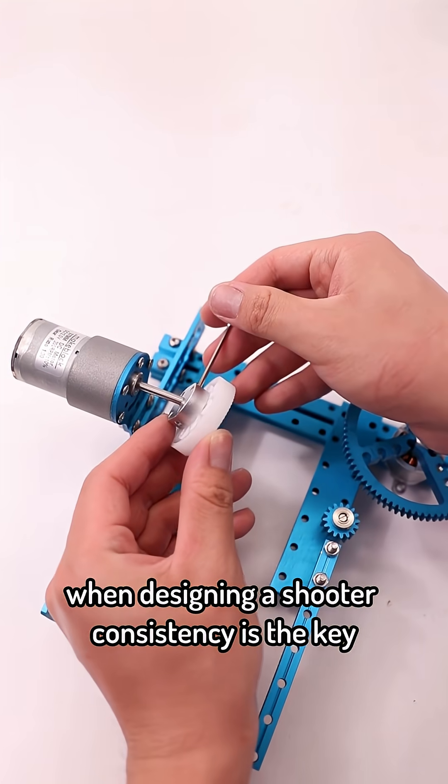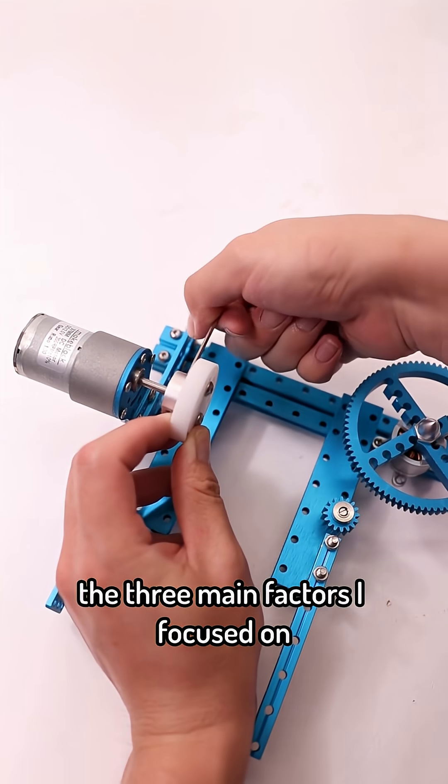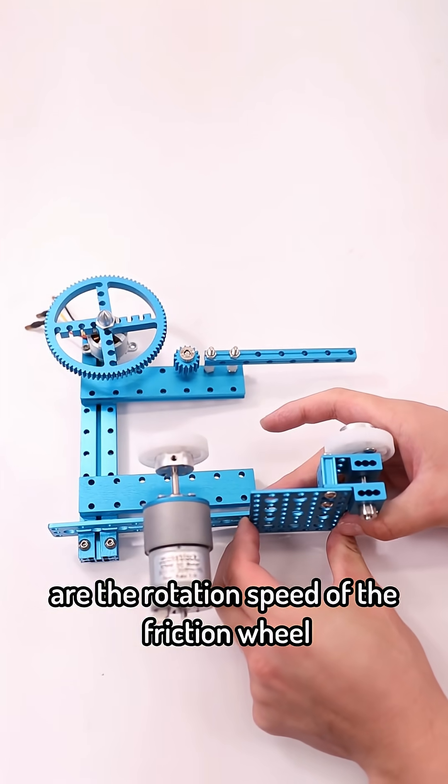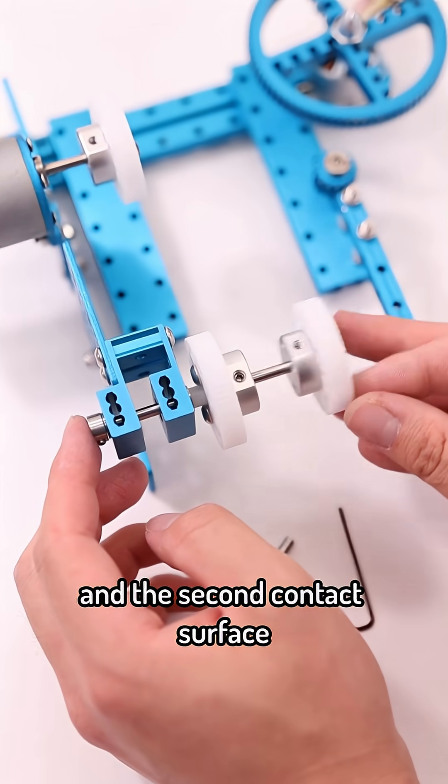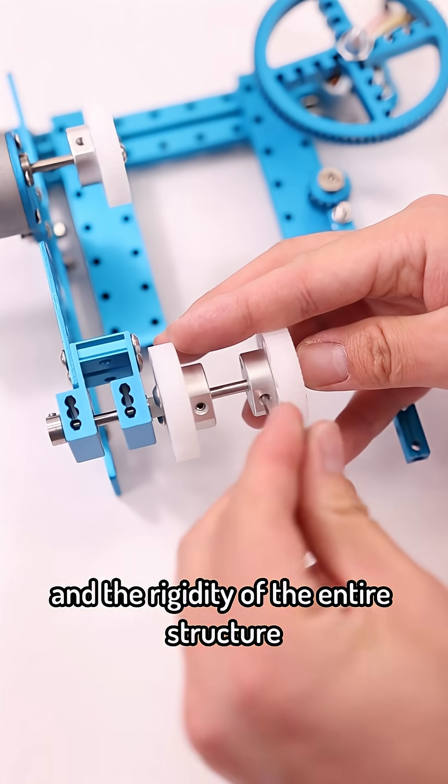When designing a shooter, consistency is the key. The three main factors I focused on are the rotation speed of the friction wheel, the compression between the friction wheel and the second contact surface, and the rigidity of the entire structure.